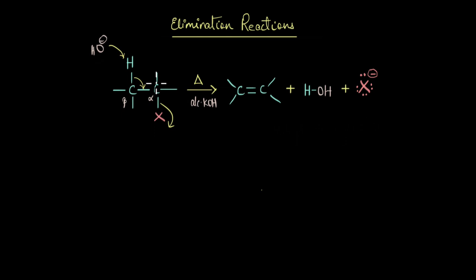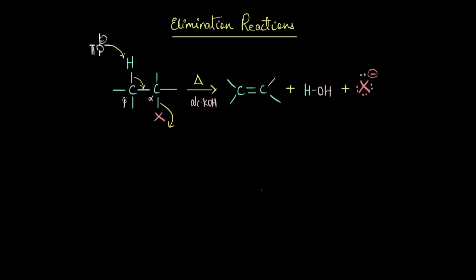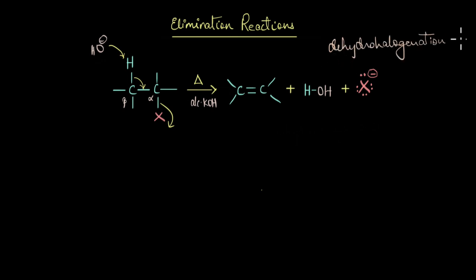This is what a typical elimination reaction looks like. When we heat a haloalkane in the presence of a strong base like alcoholic KOH, the base abstracts a hydrogen atom from the beta carbon and produces an alkene. Because the base abstracts a beta hydrogen, the elimination reaction is also called a beta elimination reaction.